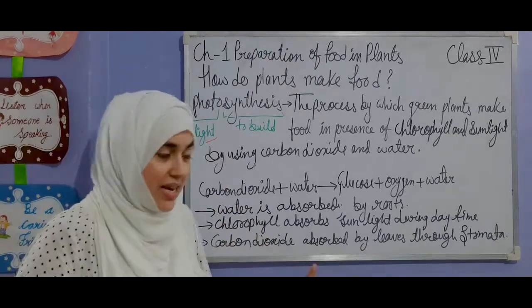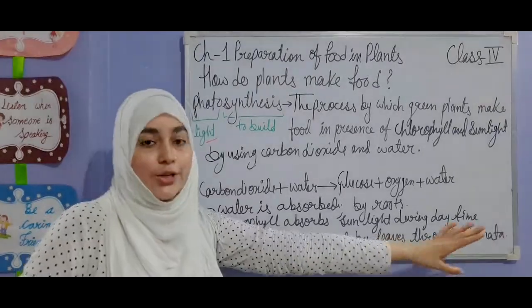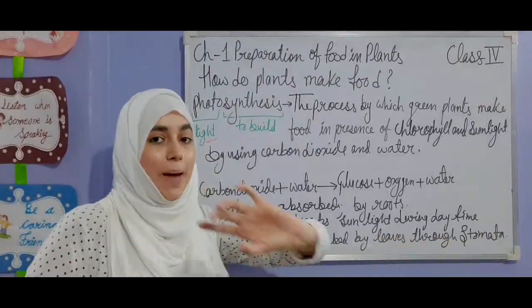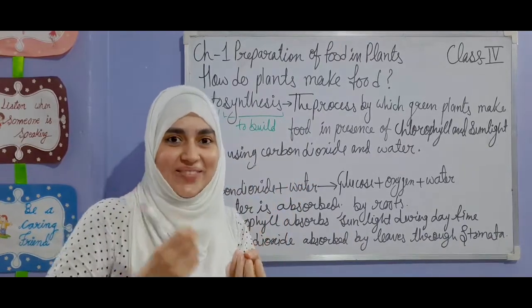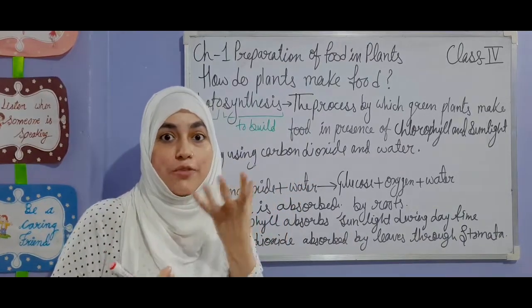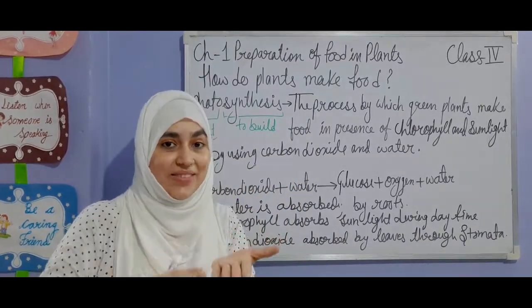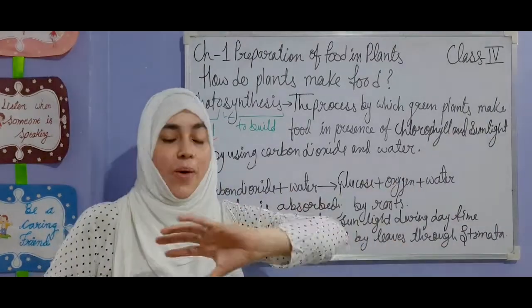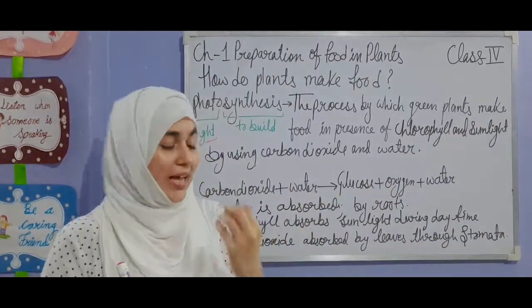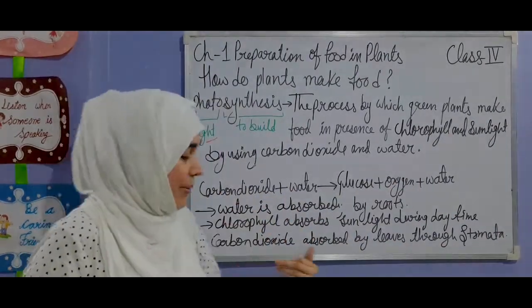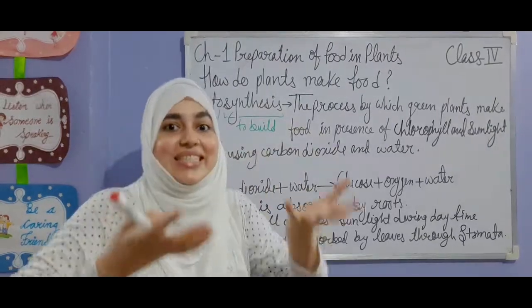Next, carbon dioxide is absorbed by leaves through stomata. When you observe the leaves, you will find tiny holes on the surface of the leaves — those are known as stomata. Stomata absorb carbon dioxide which we are exhaling.